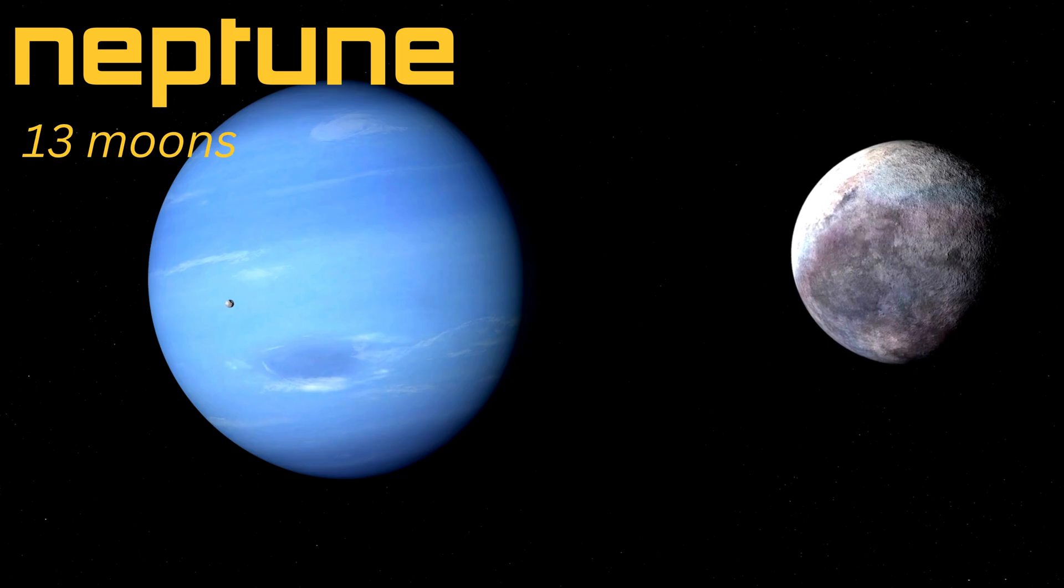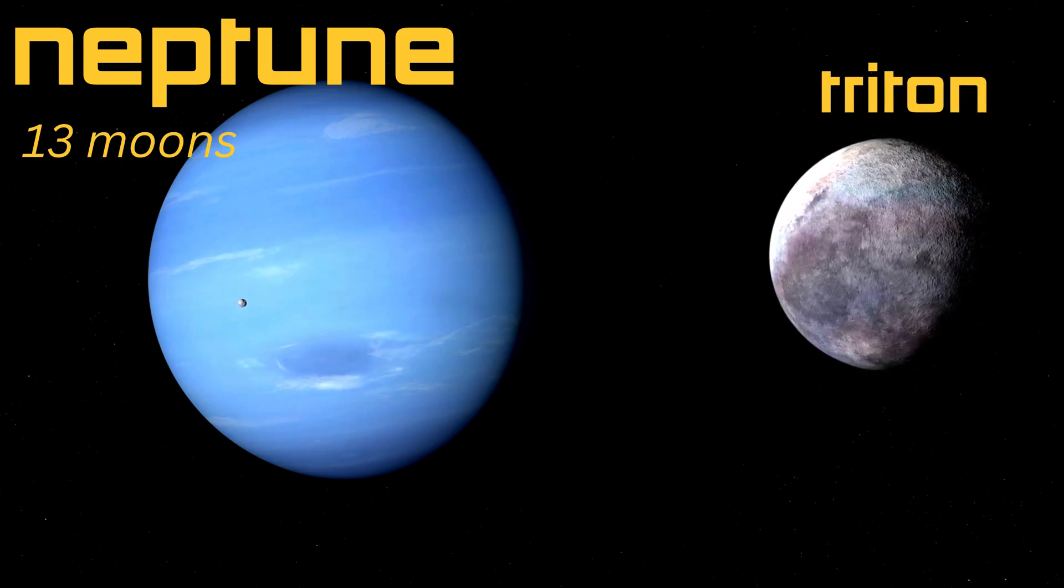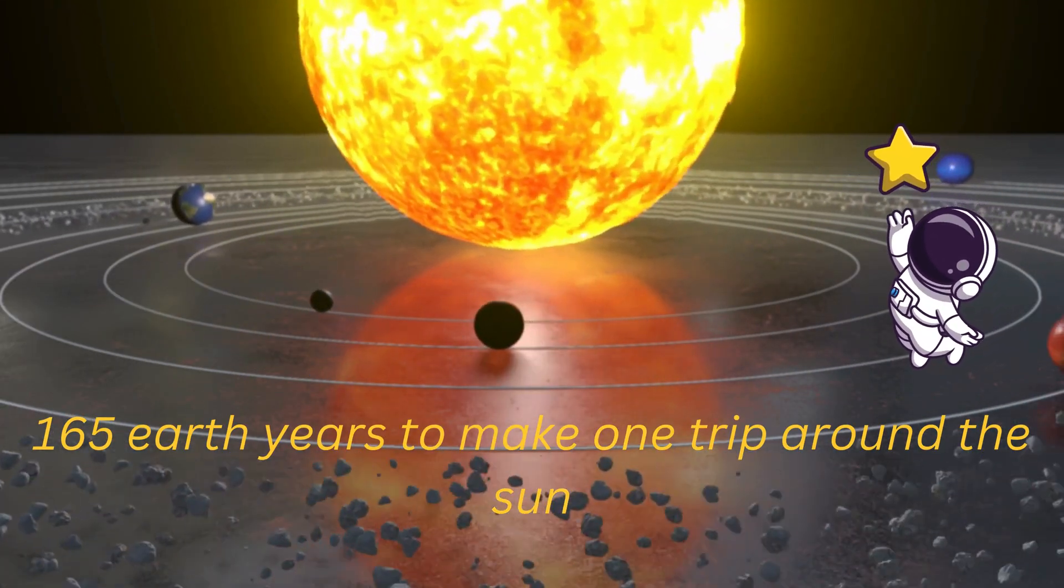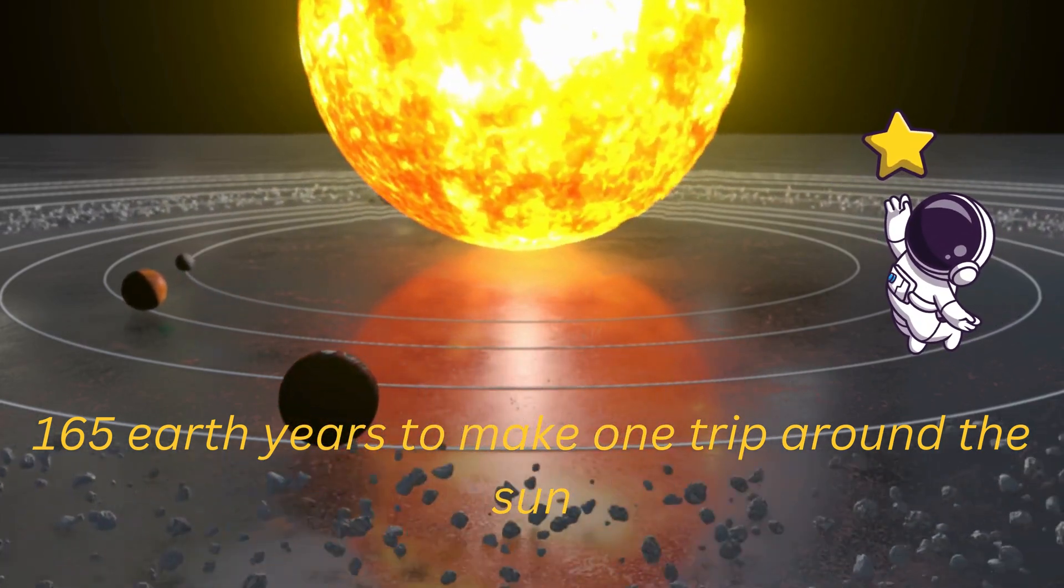Neptune is a deep blue color because of methane in its atmosphere. It has 13 moons, and one of them, called Triton, is one of the coldest places in the solar system. Neptune is so far away that it takes 165 Earth years to make one trip around the sun. That's one long year.